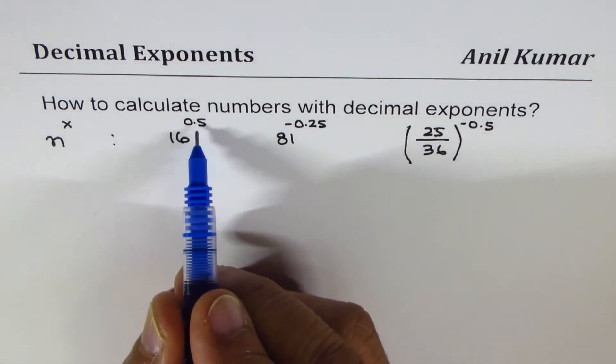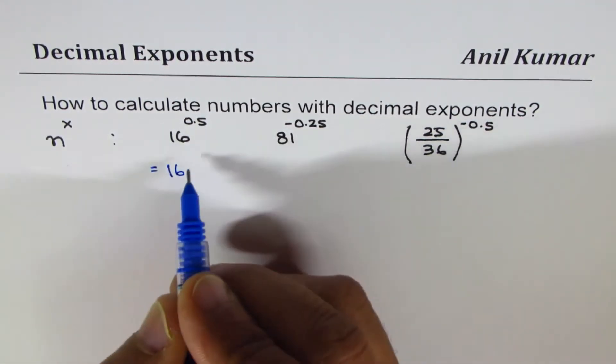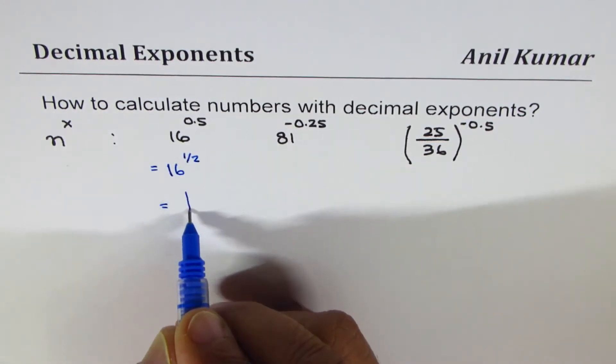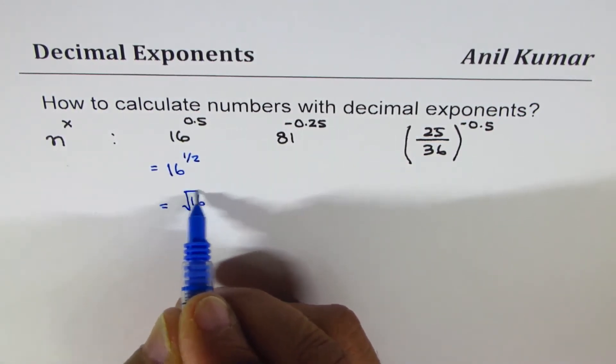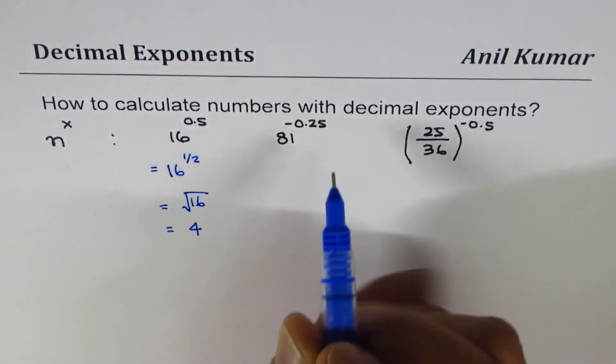When we say 16 to the power of 0.5, it really means it is equal to 16 to the power of half, which is the square root of 16, and as you know, square root of 16 is 4.